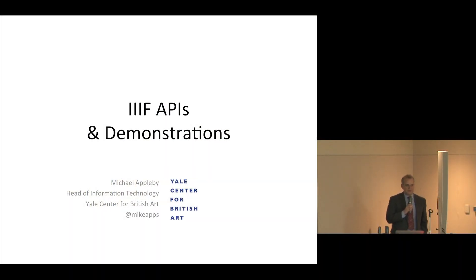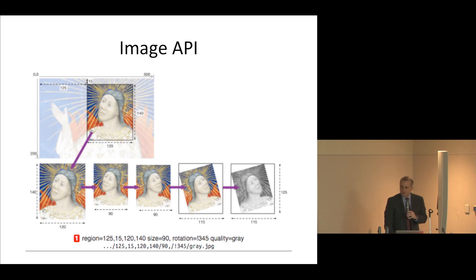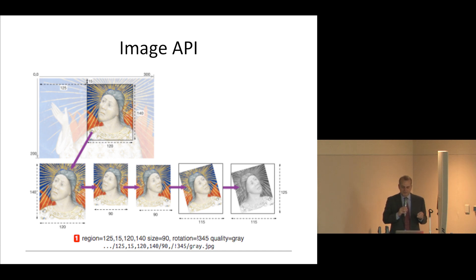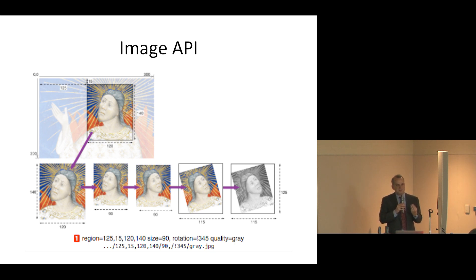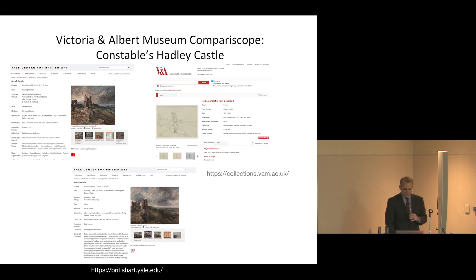My name is Mike Appleby from the Yale Center for British Art at Yale University. I'll talk about the IIIF APIs with some demonstrations. The Image API allows a software client to request an image or region of an image. In the example shown, a request is made for a specific region of interest — the face — and the rest of the URL defines how that image should be scaled, flipped, rotated, and changed to grayscale, with the .jpg extension indicating the format returned by the server.